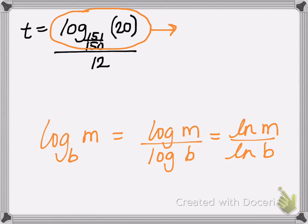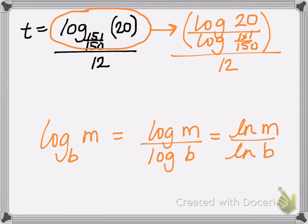So for those of you on the TI-83s, you would need to enter this as the log of 20, because 20 is the argument, divided by the log of the base, and the base is the 151 divided by 150. So you'd have to enter that in your calculator, and then you would take that result and divide by 12.